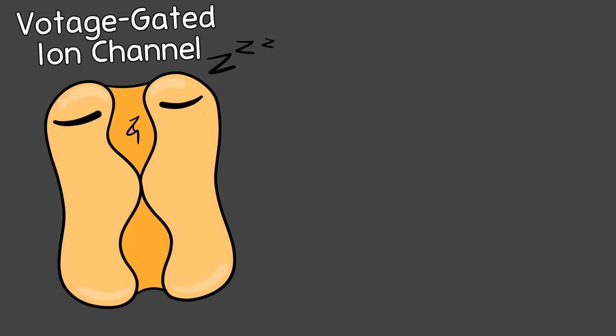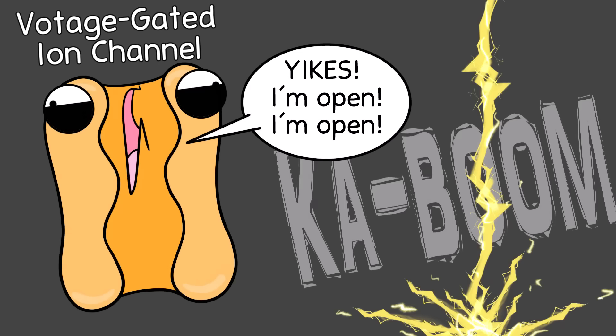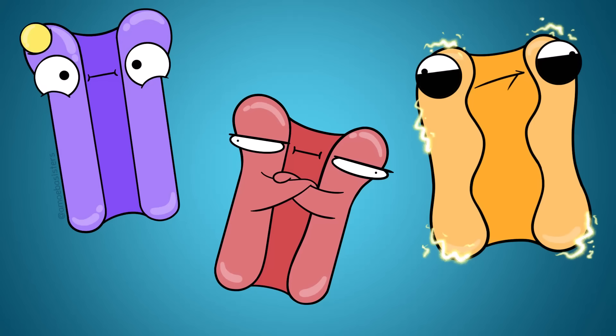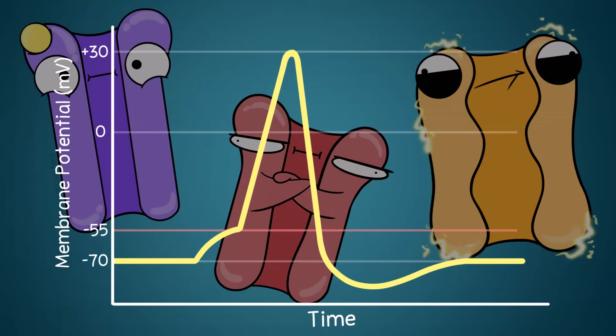Voltage-gated ion channels are big players in the action potential events, responding to specific voltage changes. Overall, these different types of gated channels are critical in allowing depolarization to start and for the events of the action potential to happen.